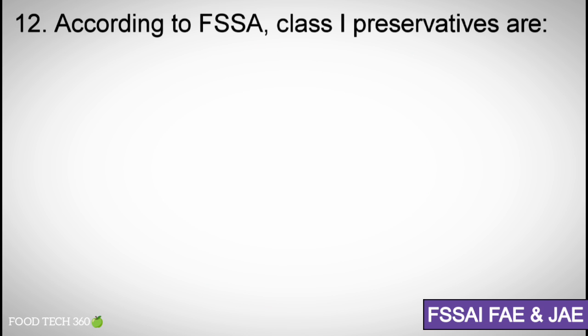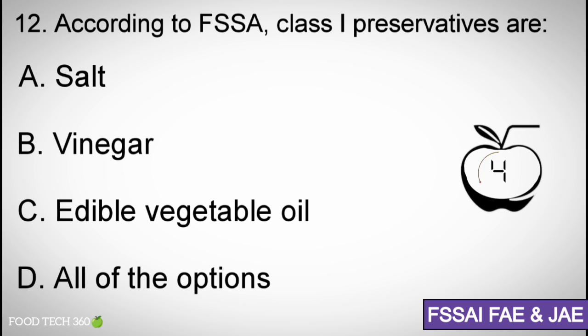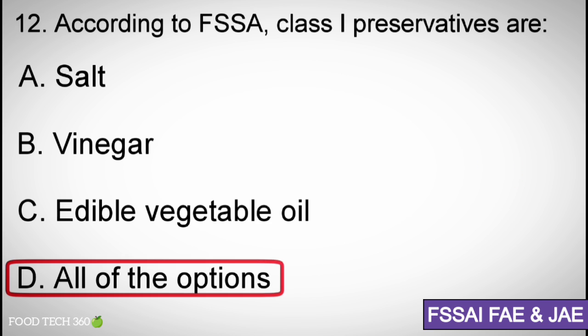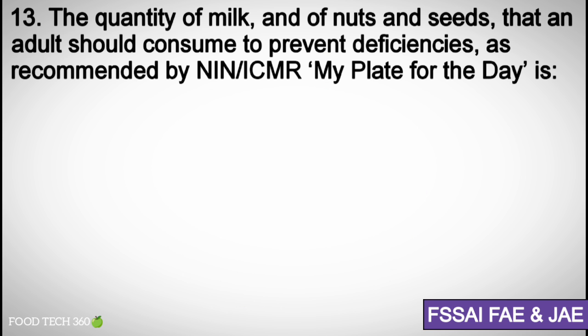Question number twelve: According to FSSAI, Class 1 preservatives are — Options: A) Salt, B) Vinegar, C) Edible vegetable oil, D) All of the options. Correct answer: D) All of the options.